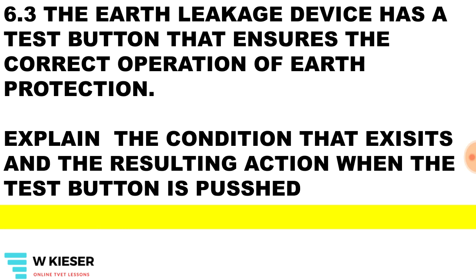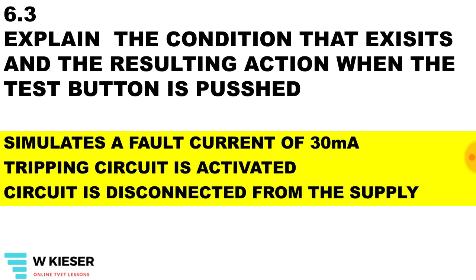The earth leakage device has a test button that ensures the correct operation of earth protection. Explain the condition that exists and the resulting action when the test button is pushed. It simulates a fault current of 30 milliamps, it will cause the tripping circuit to be activated, and the circuit will be disconnected from the supply.